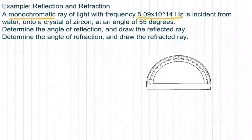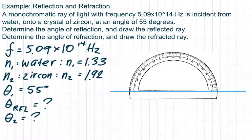We have an incidence angle of 55 degrees, and we want the reflected ray and the refracted ray. So let's write down our given information. I looked up the indices of refraction for water and zircon from the reference table, page two, the absolute indices of refraction chart. Then I have my incidence angle 55, and I want two other angles.